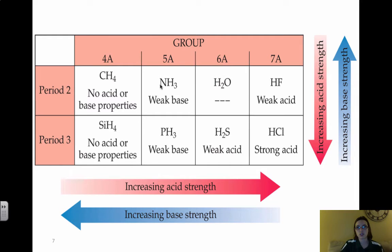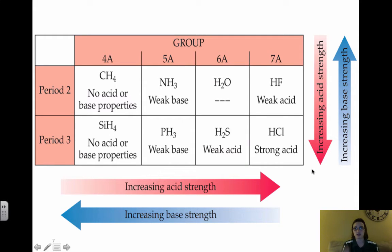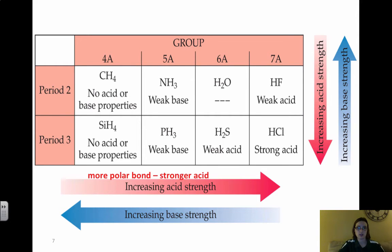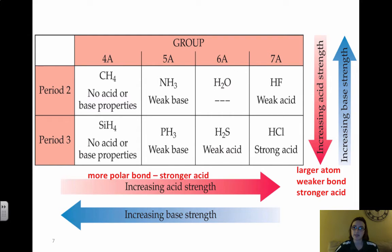This is a visual showing increasing acid strength across and down the periodic table. If acid strength increases, base strength decreases, so increasing base strength goes in the opposite direction. To summarize: a more polar bond means a stronger acid, and a larger atom means a weaker bond, which also means a stronger acid.